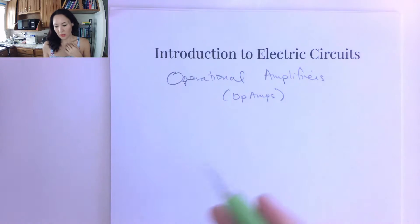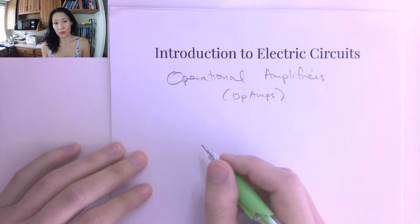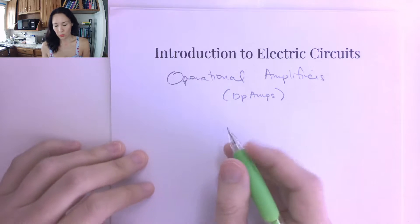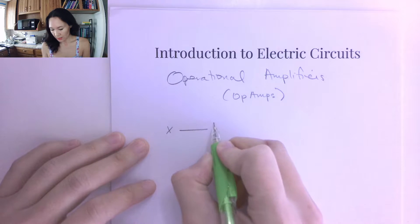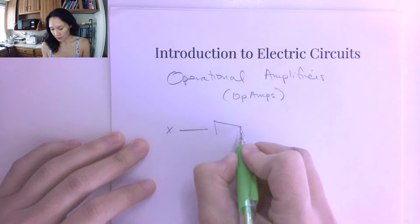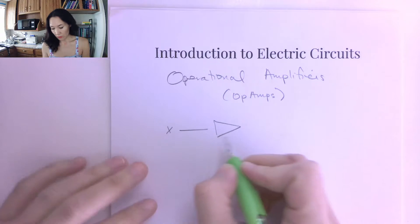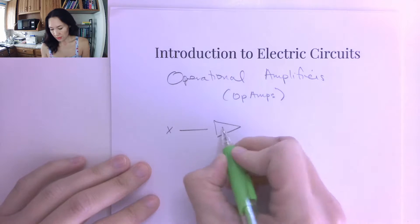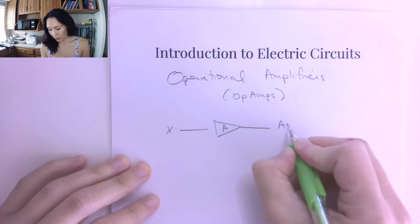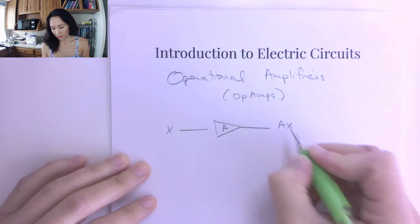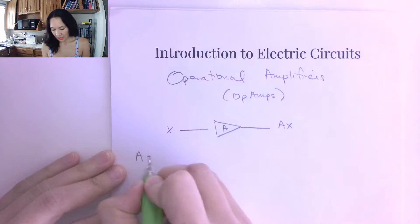Today I want to introduce the operational amplifier, or op amp for short. The definition is: it's a basic integrated circuit. It takes an input signal x — which can be either a voltage or a current — amplifies it, and outputs the amplified signal. This amplification factor is called the gain.